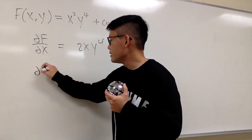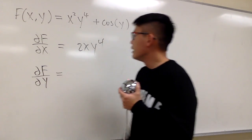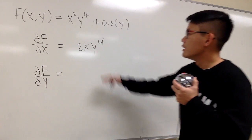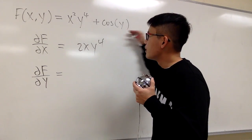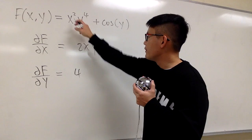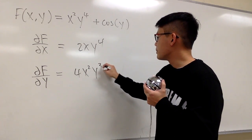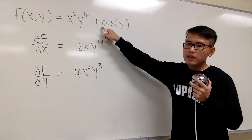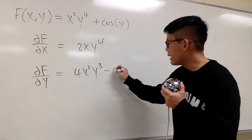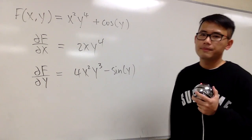Next, we can talk about the partial of f with respect to y. Now y is the variable and x is the constant. For this term, bring the 4 to the front, x squared stays, and we subtract 1, so we get y to the third power. And the derivative of cosine y in the y world is negative sine of y. And we are done.